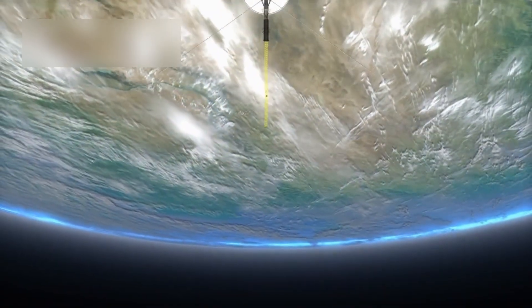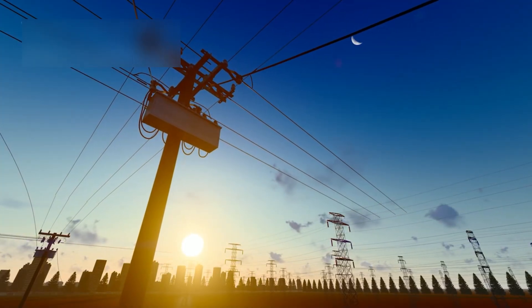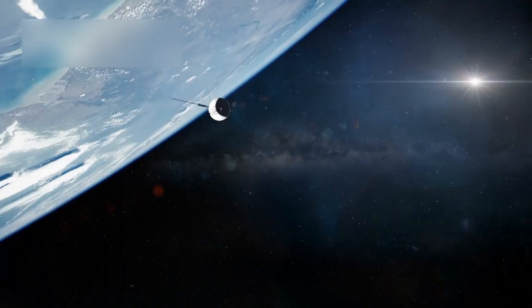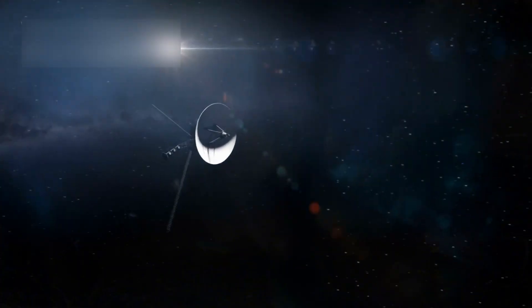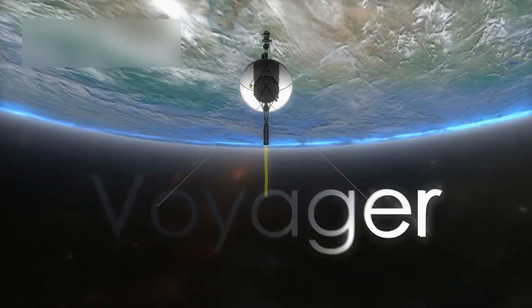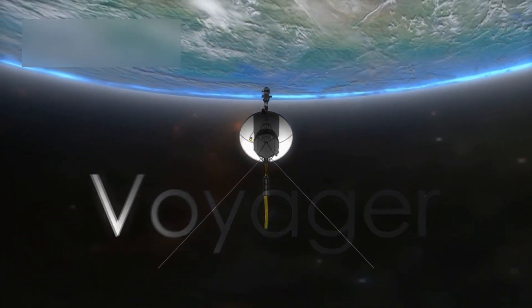The spacecraft continues to face serious challenges. Communication with Earth takes about 19 hours one way, and its power supply is dwindling. To save energy, NASA has had to shut down non-essential systems, leaving only the most critical instruments running. Still, Voyager 1 keeps transmitting valuable data, proving how well it was built.